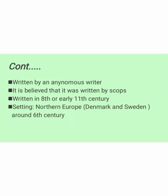It was written by an anonymous writer — no one knows who wrote this poem. It is believed it was written by scops, who were the group of poets of Old English. It was written in the eighth or early eleventh century; both centuries can be considered. Its setting is in northern Europe, particularly in Denmark and Sweden, around the sixth century.